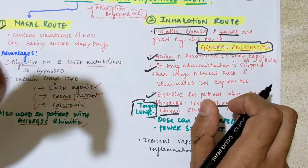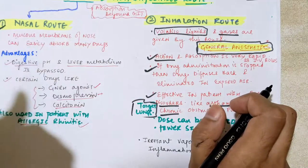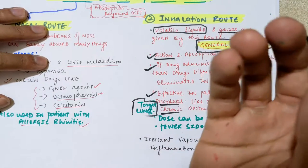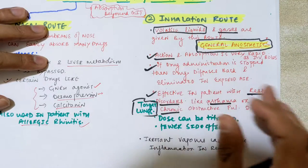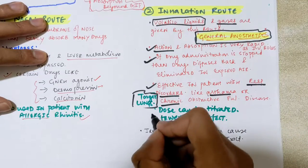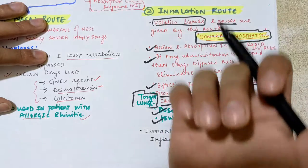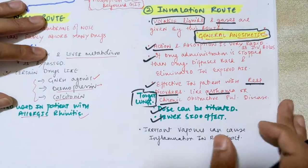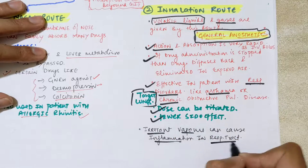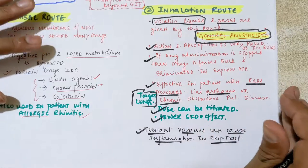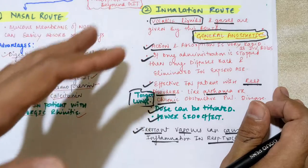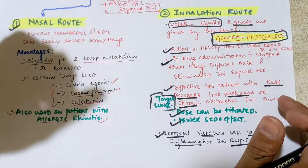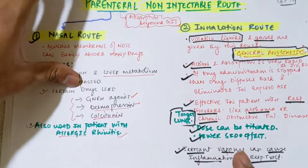A common example is asthma — the patient uses puffs containing salbutamol and beta adrenomimetic drugs. In patients with dyspnea, we use the inhalation route with salbutamol. It is also used in chronic obstructive pulmonary disease (COPD). Doses can be titrated, and there are fewer side effects since the drug goes directly to the target organ. However, some irritant vapors can cause inflammation in the respiratory tract down to the alveoli, depending on the drug used.